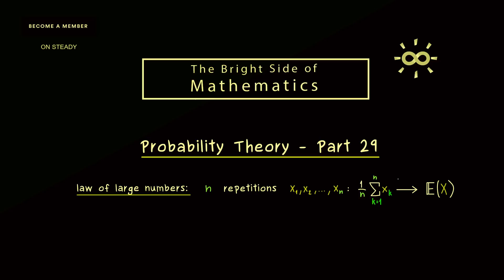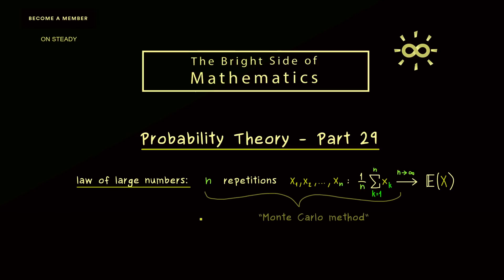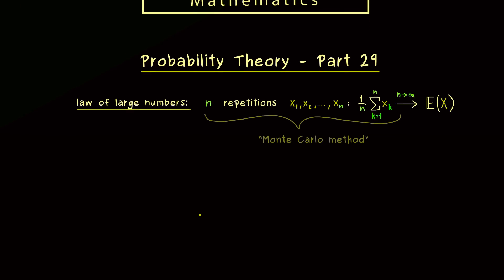So formally we would write that this converges to the expectation of the random variable capital X. And indeed mathematically we have to explain what this convergence actually means. And we have done that in the last video about the weak law of large numbers. Okay, and now the so-called Monte Carlo methods use this fact to approximate this value here on the right hand side. In other words, we have a numerical approximation here by using the randomness. And how this works in practice, we can now see with the numerical integration.